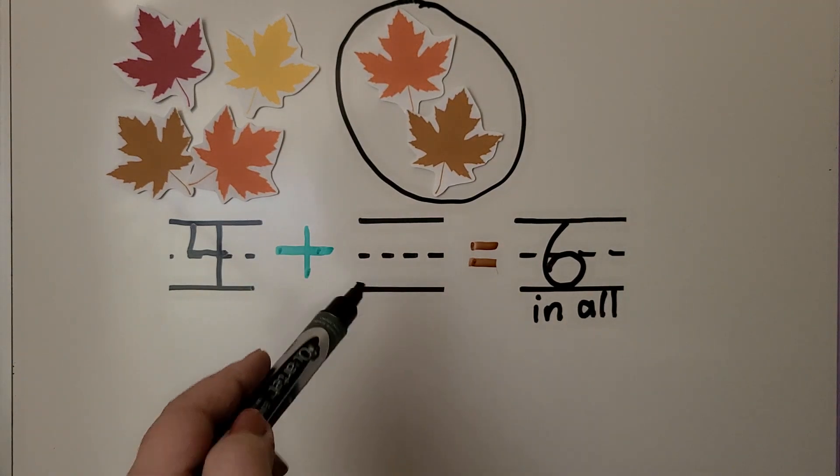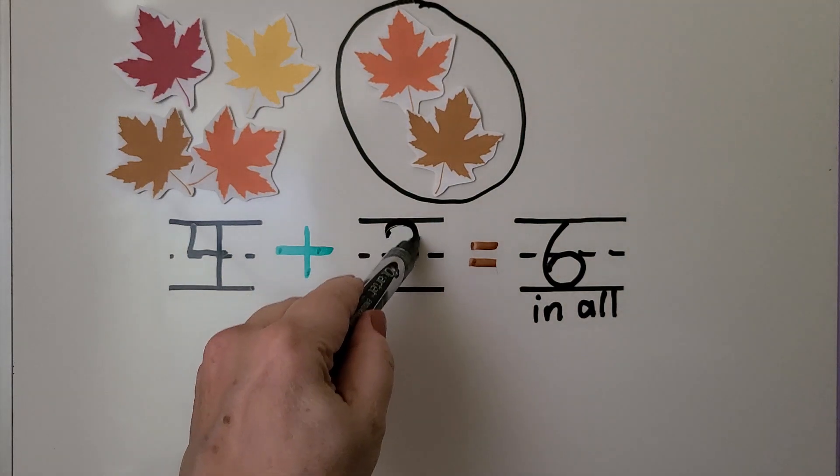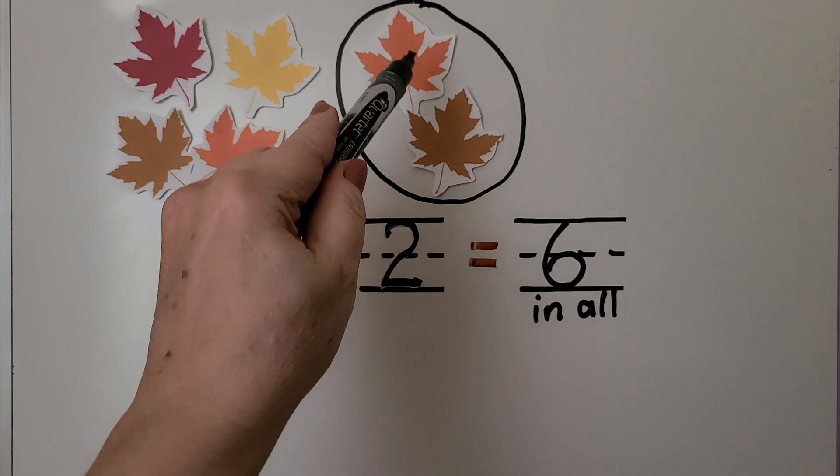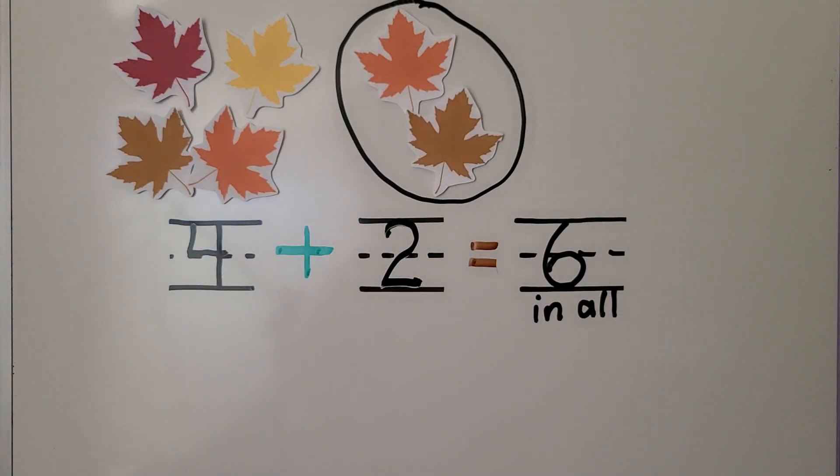We can write the two. There are two being added. Four plus two is equal to six.